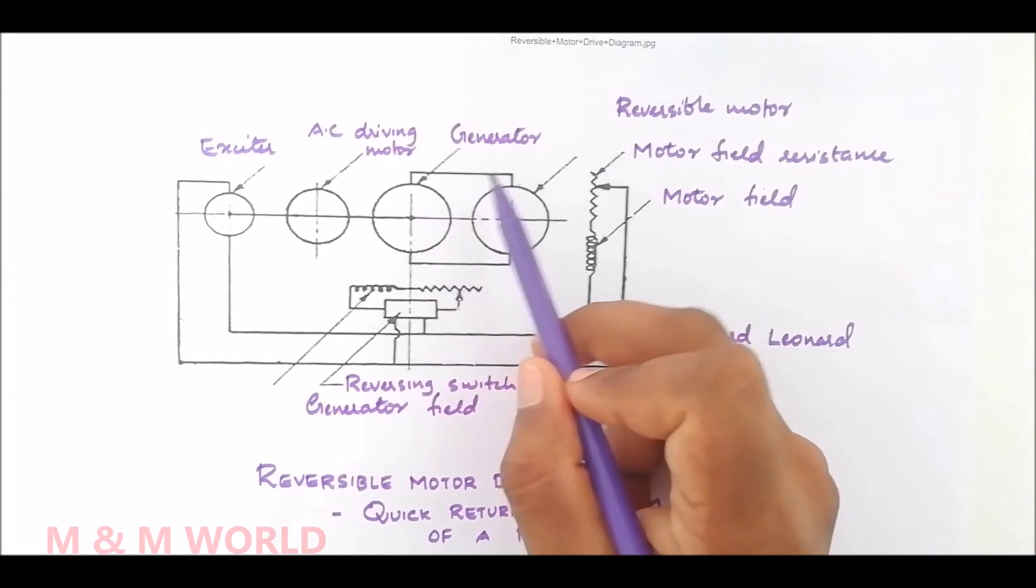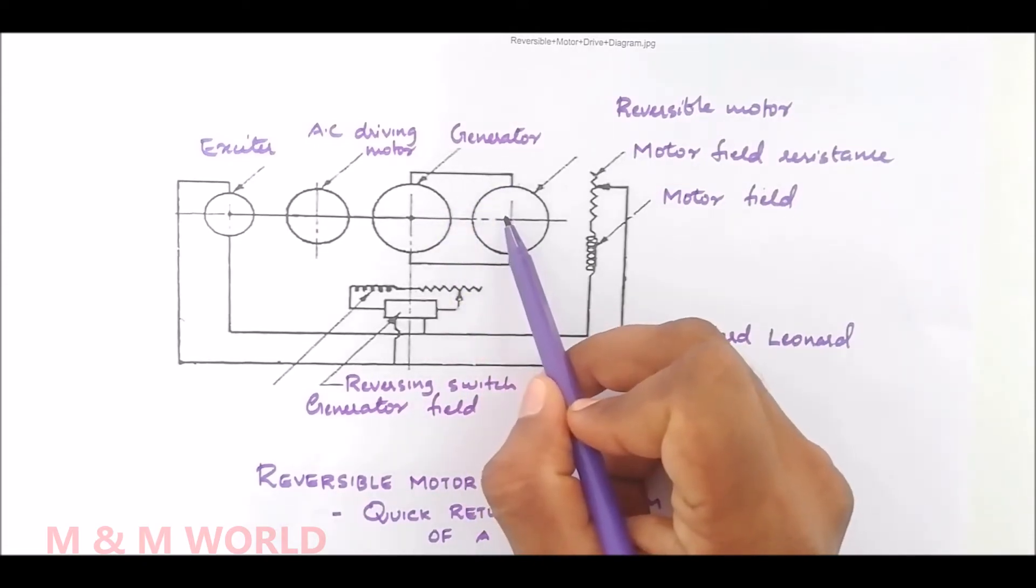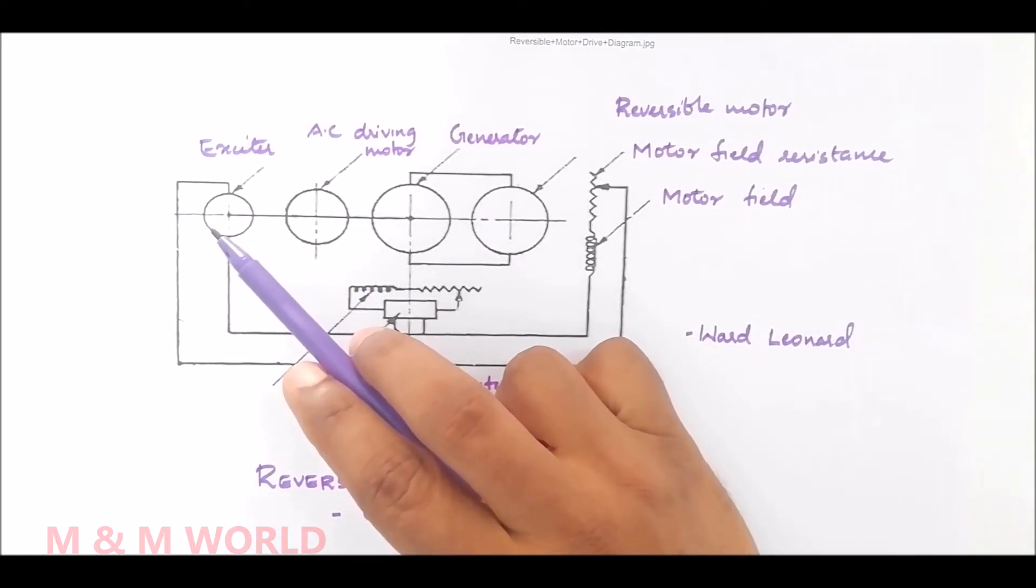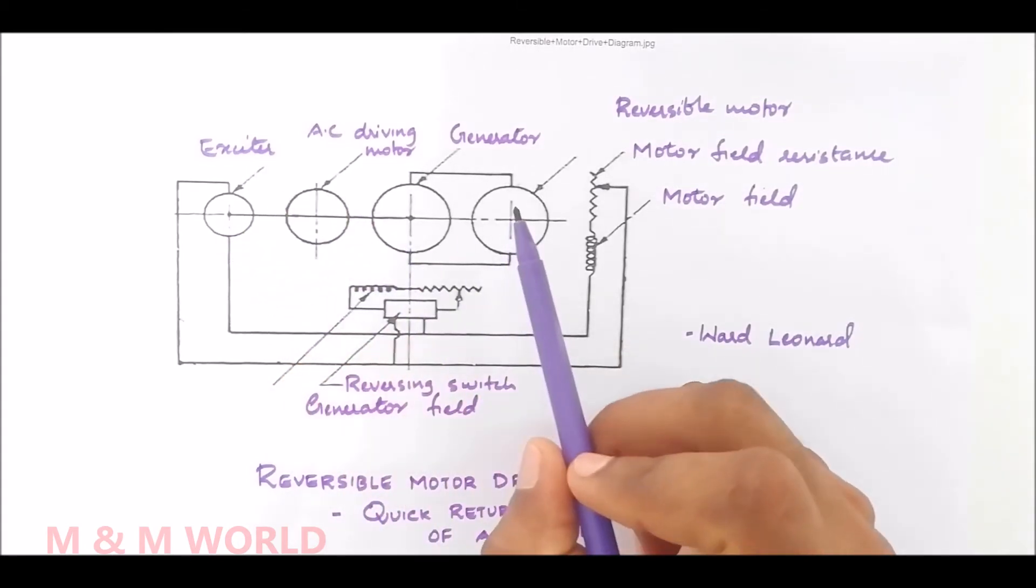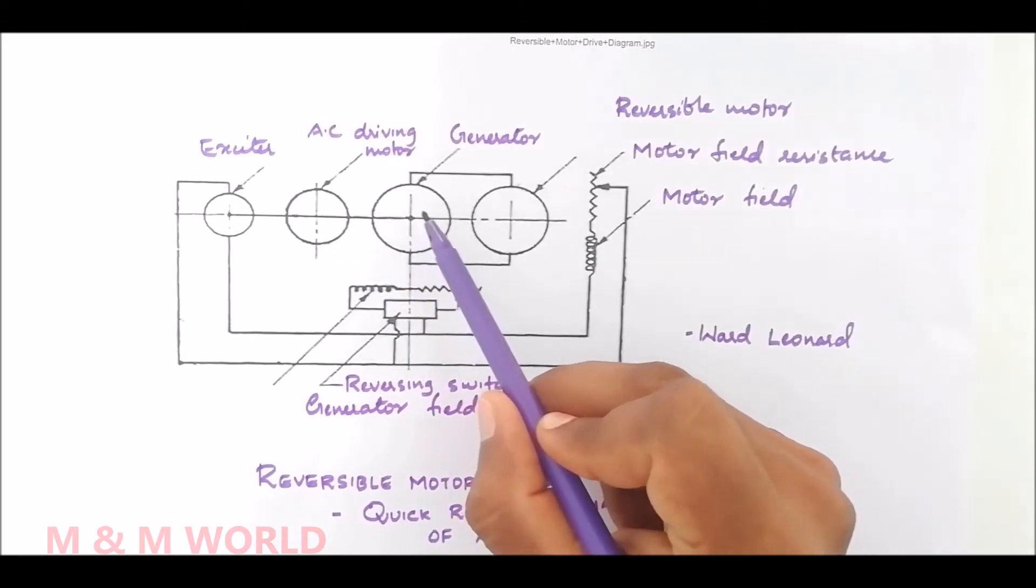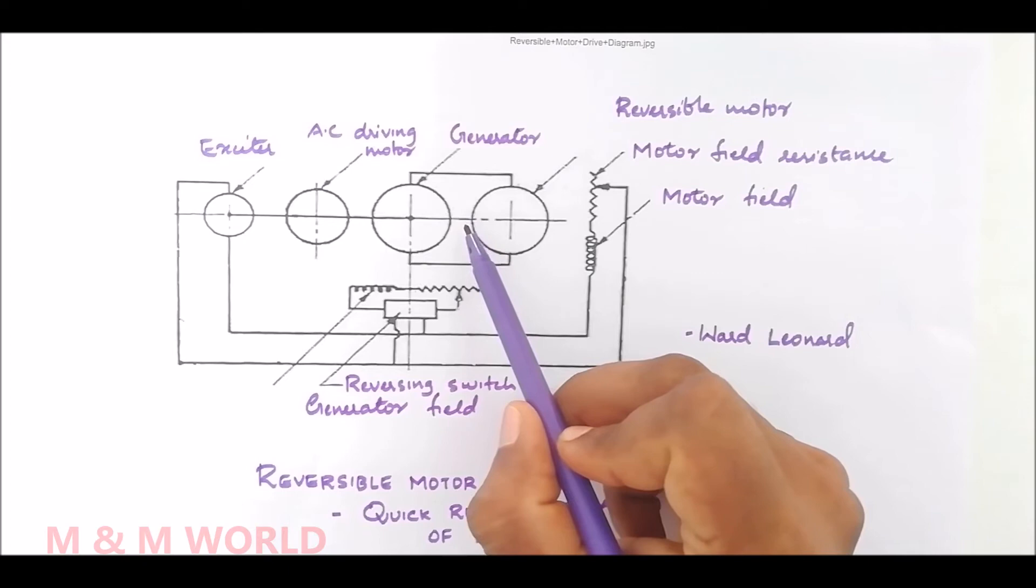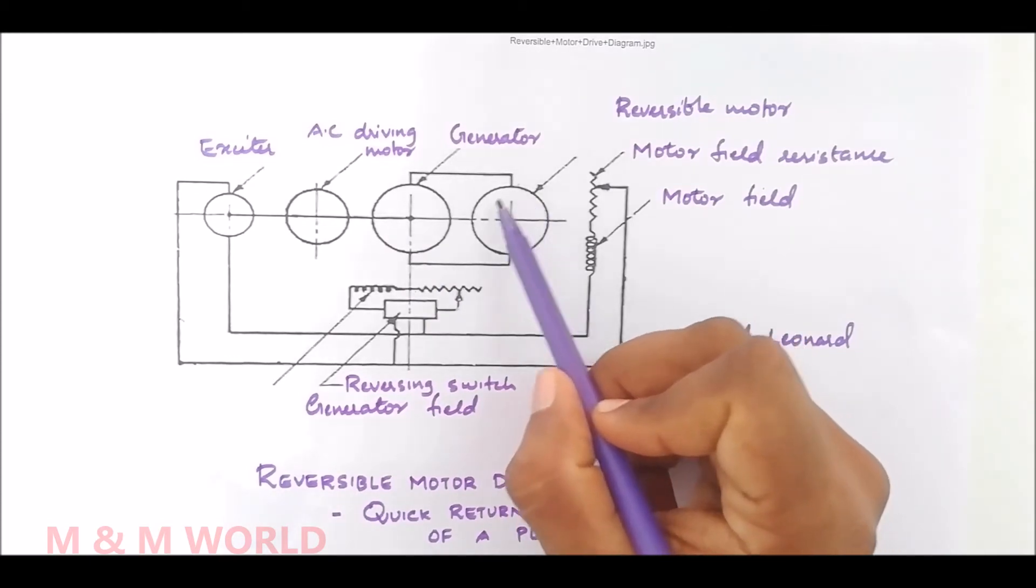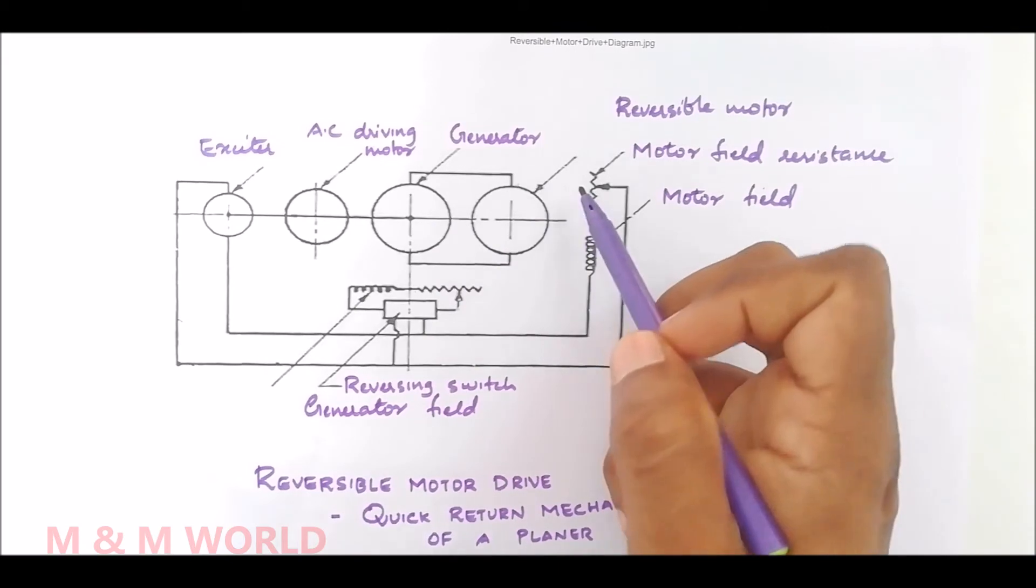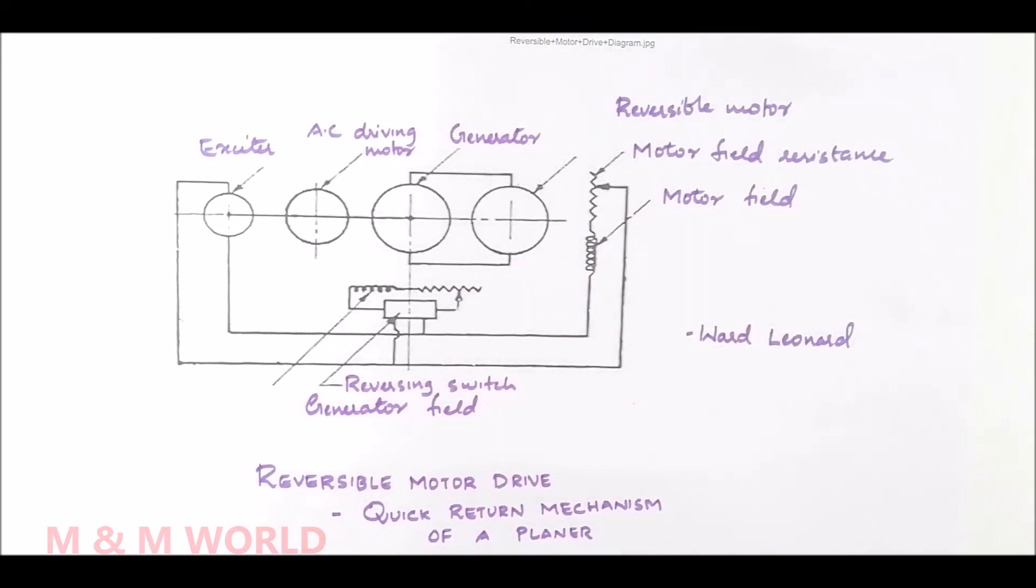The field current for the generator and the reversible motor is obtained from the exciter. To start the machine, the motor generator set is started and the generator supplies power to the reversible motor which causes the table of the planer to move in a particular direction.